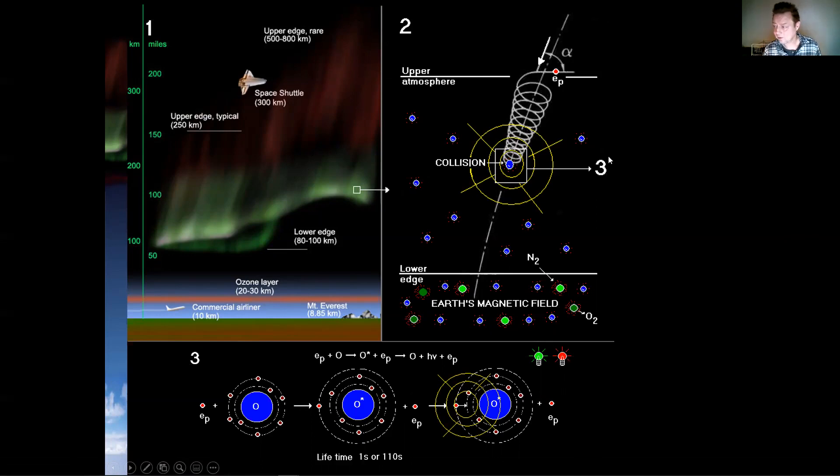If the energy is higher, then the electron will penetrate further down into the atmosphere and the light will be green at 5577 Angstrom.